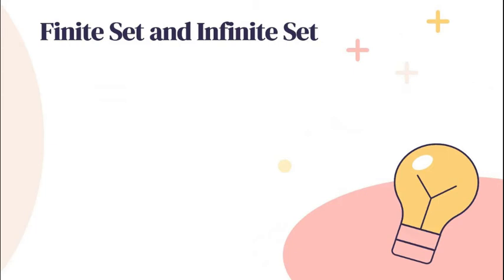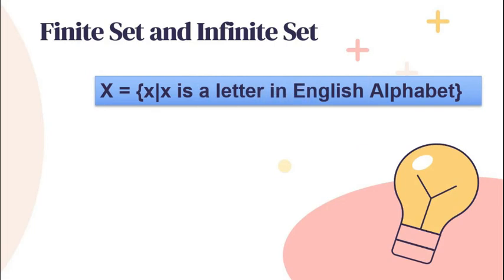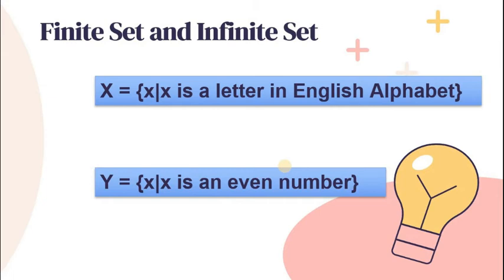Let's proceed to finite set and infinite set. I have here two examples. Set X is equal to x such that x is a letter in the English alphabet. Set Y is equal to x such that x is an even number. Anong klaseng way of describing a set? That is set builder notation. Let's analyze first set X — set X is equal to x such that x is a letter in English alphabet. Since x is a variable, it could have any value, depende sa ating description na ipinigay. Ang ating description for set X: letter in English alphabet. Ano pa yung mga letters in English alphabet? Meron ba siyang katapusan? Yes.